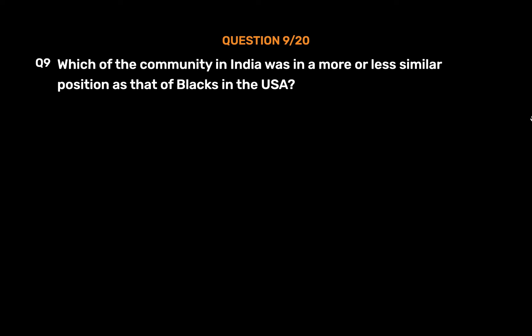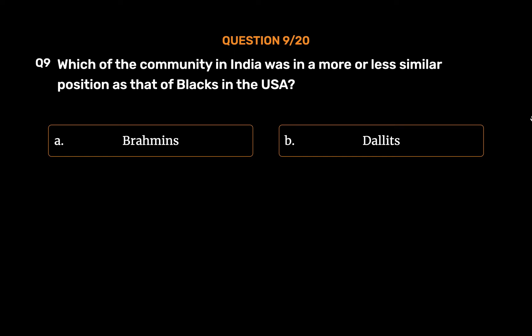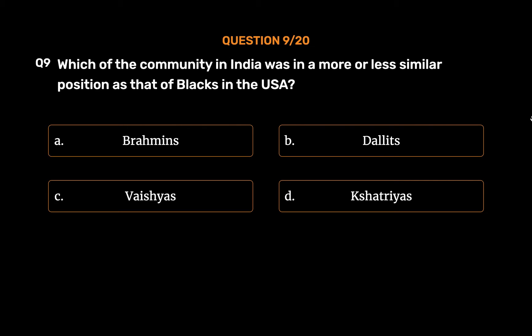Question number 9. Which community in India was in a more or less similar position as that of blacks in the USA? Option A: Brahmins. Option B: Dalits. Option C: Vaishyas. Option D: Kshatriyas.